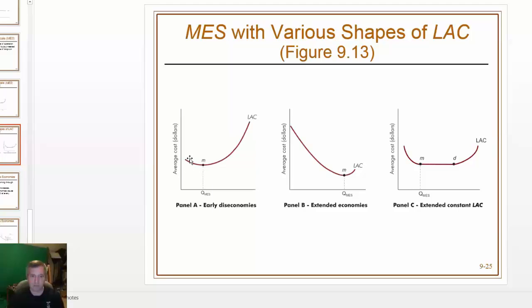So it would seem like the most efficient that panel A can do, or firms in industry A can do, still leaves them having average costs that are higher than the average cost that these large companies in panel B are able to enjoy.